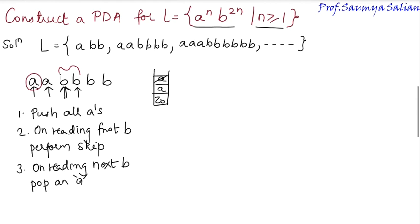Similarly, now when I read this B, I will perform skip operation. That is repeat step 2 and 3. Perform skip operation. Move to this B. On reading this B, perform pop operation. So now repeat until you read an epsilon. The moment I see an epsilon, stop. On reading epsilon, stop and reach final state.